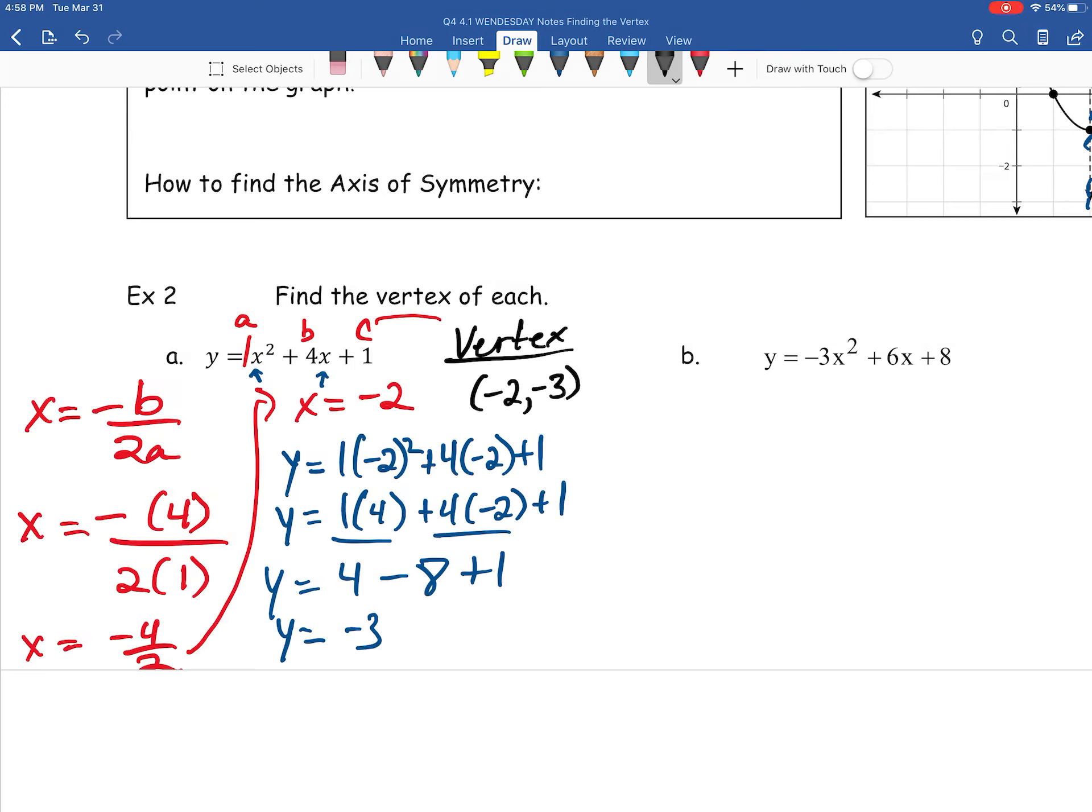Now, because our a value here is a positive 1, you would expect to see a u facing upwards. And then, this vertex that we just found is the location of that minimum value.